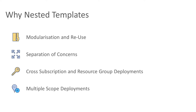Nested templates are also a requirement for using some features of ARM. A key example we'll look at today is the ability to deploy to different subscriptions or resource groups in different parts of your template. So if 90% of your resources need to go in one resource group but another resource needs to go somewhere else, we can use nested templates to deploy that second part to a different resource group or even subscription as part of the same overall template. Another piece of functionality requiring this is the use of multiple scopes — deploying resources that exist at scopes other than the resource group scope.